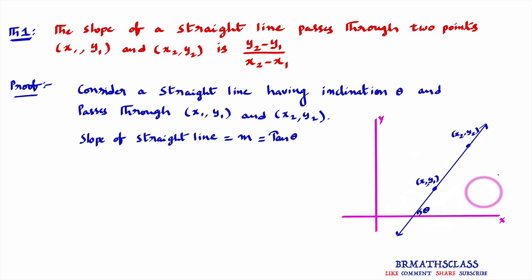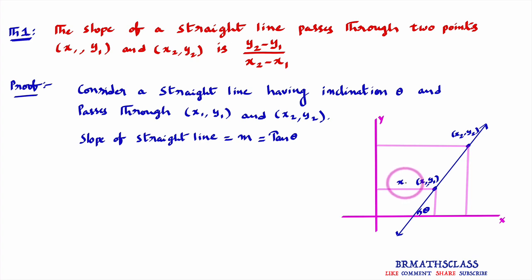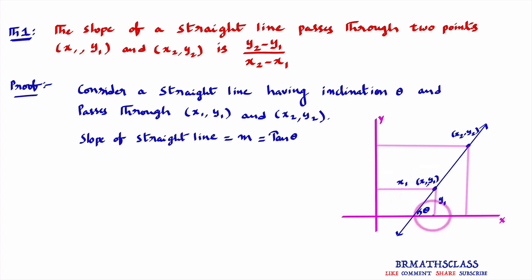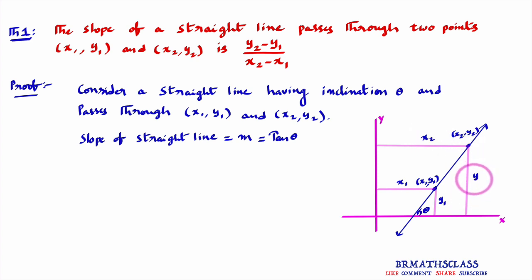Observe the diagram. As this point is x1, y1, the perpendicular distance from the point to the y-axis is x1, and the perpendicular distance from the point to the x-axis is y1. Similarly, as this point is x2, y2, this length is x2 and this length is y2.